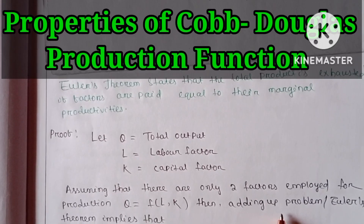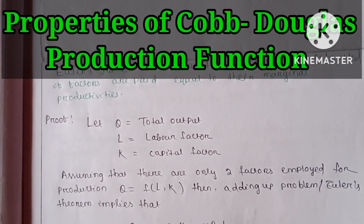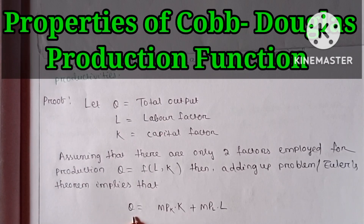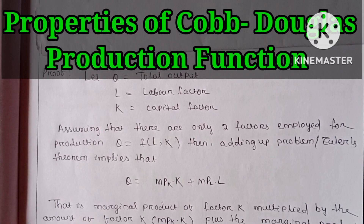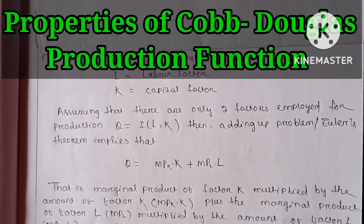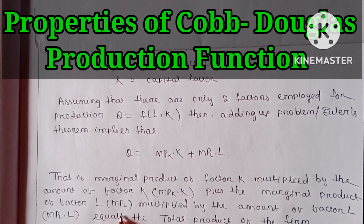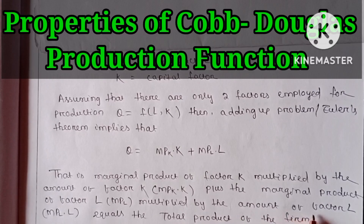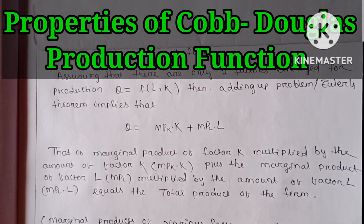According to Euler's theorem, total output Q equals MPK into K plus MPL into L. This means the marginal product of factor K multiplied by the amount of factor K, plus the marginal product of factor L multiplied by the amount of factor L, equals the total product of the firm.